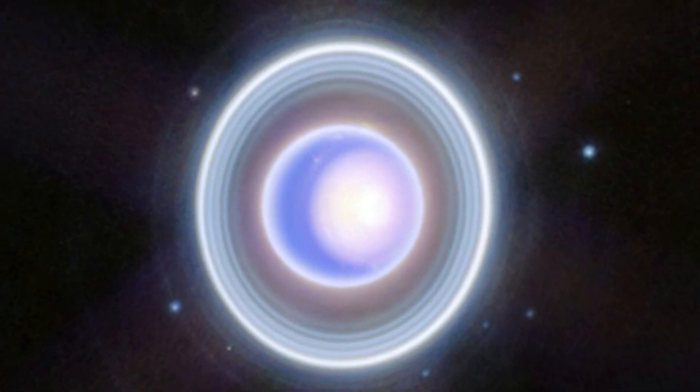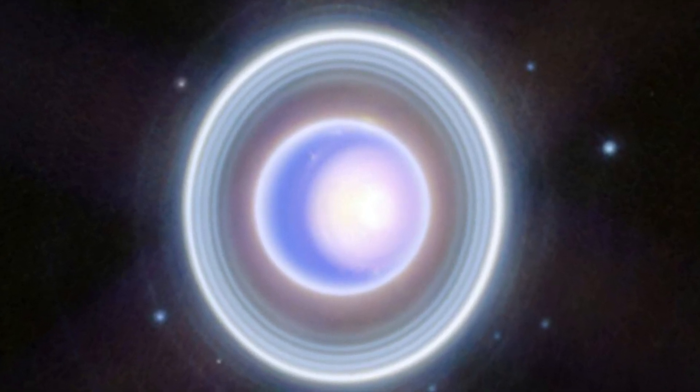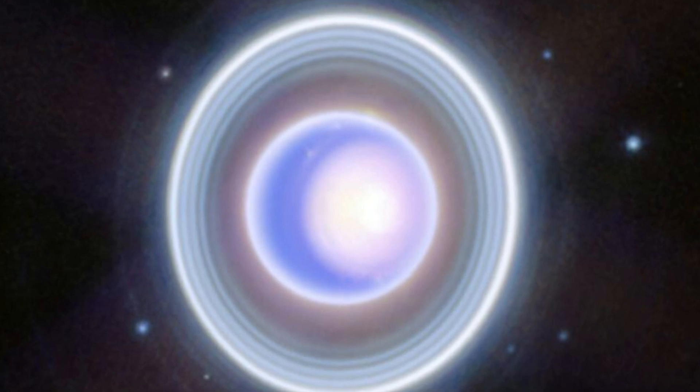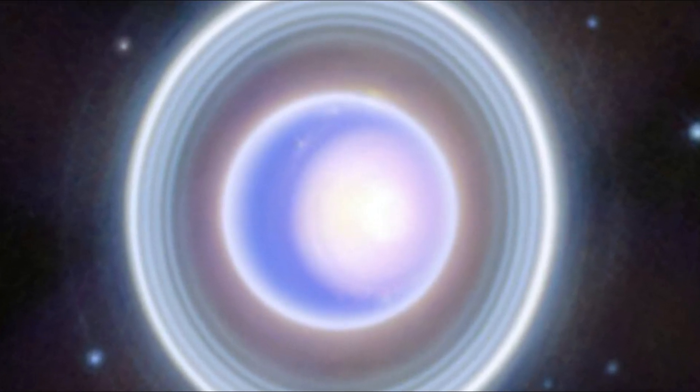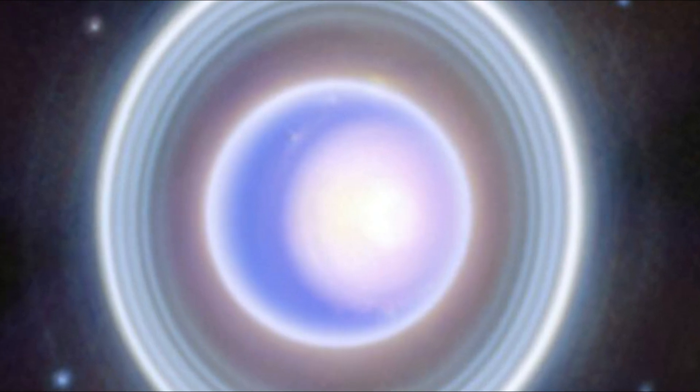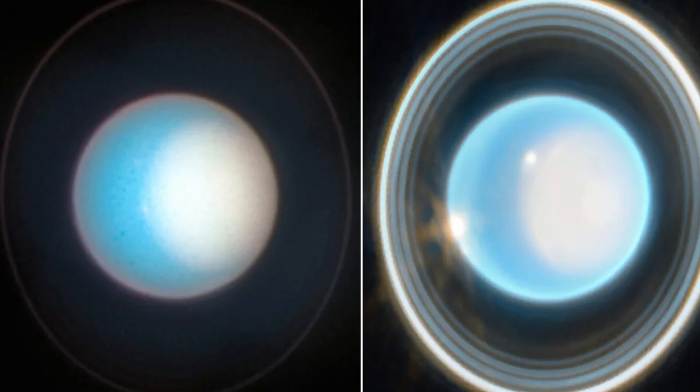NASA's James Webb Space Telescope has turned its gaze towards the peculiar and mysterious ice giant, Uranus. The recent imagery showcases the dynamic world complete with rings, moons, storms, and intriguing atmospheric features, including a seasonal polar cap.